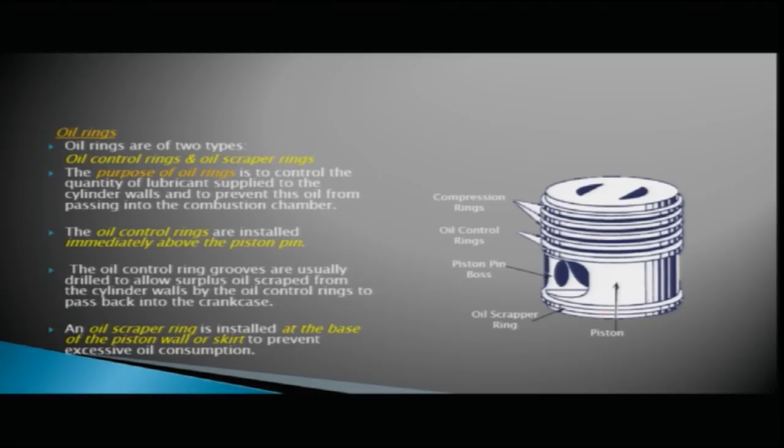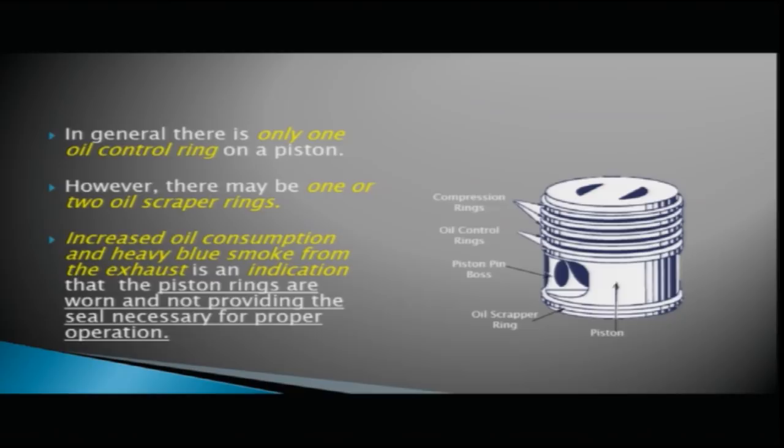In general there is only one oil control ring on a piston, however there may be one or two oil scraper rings. Increased oil consumption and heavy blue smoke from the exhaust indicates that the piston rings are worn and are not providing the seal necessary for proper operation.